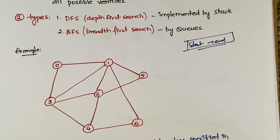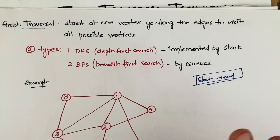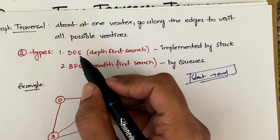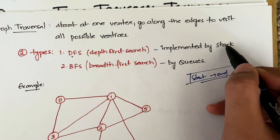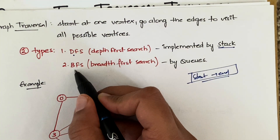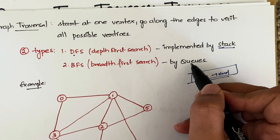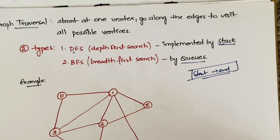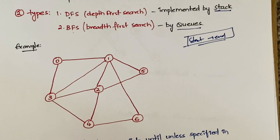In the case of a non-linear data structure, you have multiple ways to traverse because these data structures don't have a fixed start and end point. For that reason, we have two types in graphs: the first is Depth First Search (DFS), which is implemented using a stack, and the second is Breadth First Search (BFS), which is implemented using a queue. I'll explain both — they're pretty simple and straightforward.